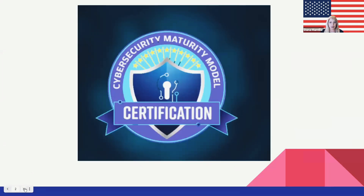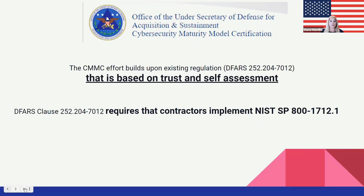So what is this cybersecurity maturity model that we're hearing about, and what does it mean for you? The Office of the Undersecretary of Defense for Acquisitions and Sustainment put together the CMMC. It is based on the existing regulation, the DFARS clause, which requires contractors to implement NIST SP 800-171. The most important difference is that the current system is based on trust and self-assessment — everybody's just saying yes, we're doing this and following cybersecurity protocol.